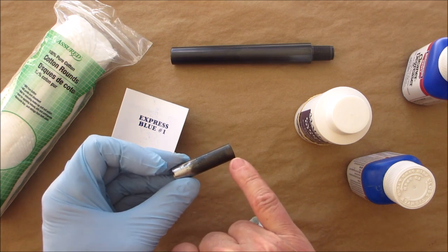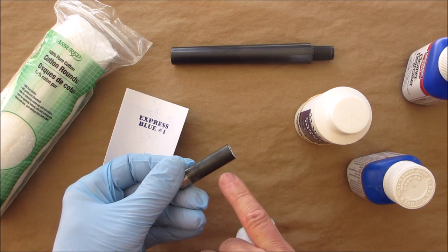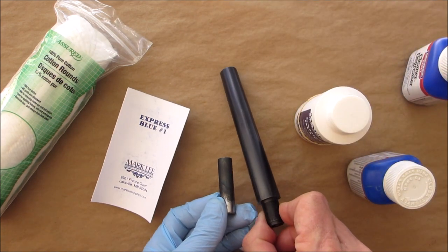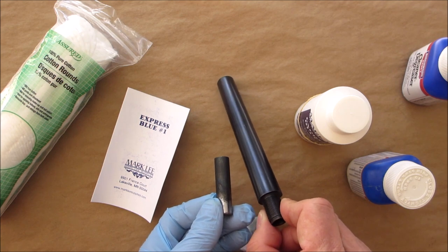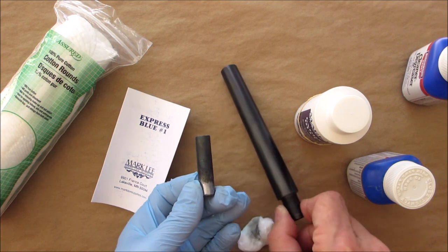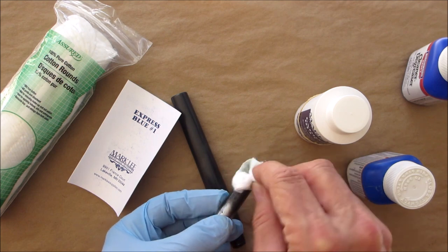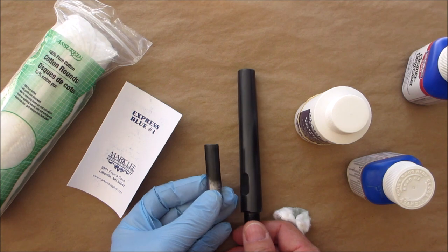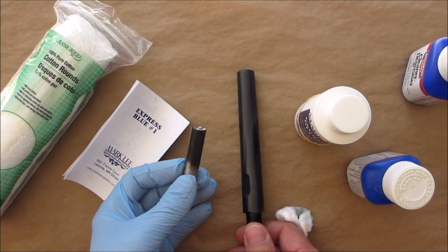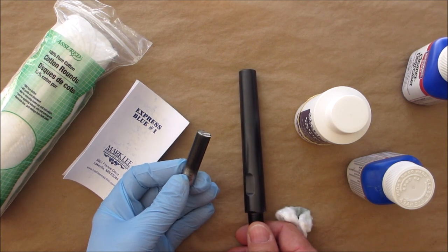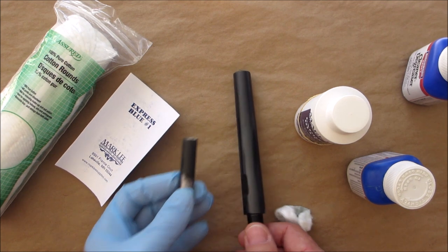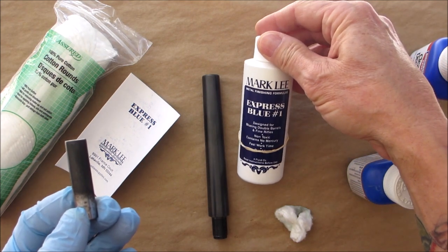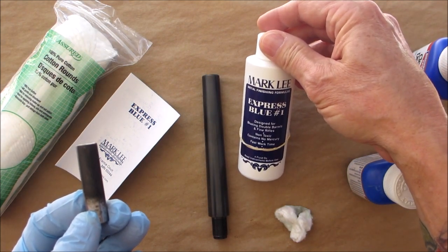Now as you can see, it leaves some splotches. Again, compared to this, you can see the shine that comes off of this one compared to this one. Again, you can get this pretty dark for something like I said, a screwdriver or something you're finishing. It works fine, but if you're going to do something like a gun barrel, you're going to want to try this Express Blue #1.